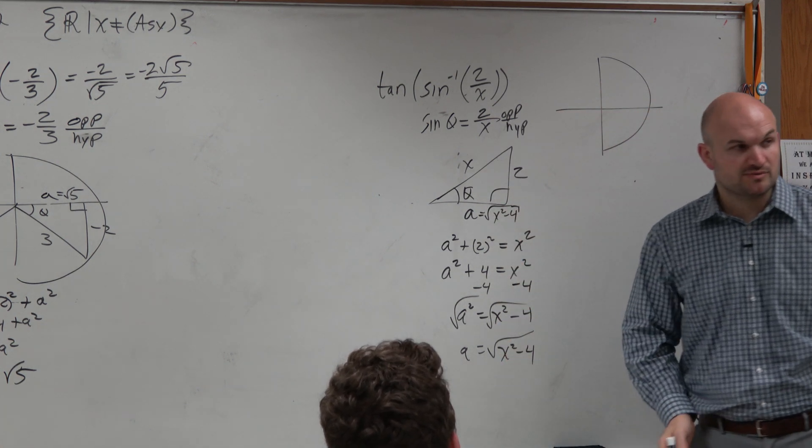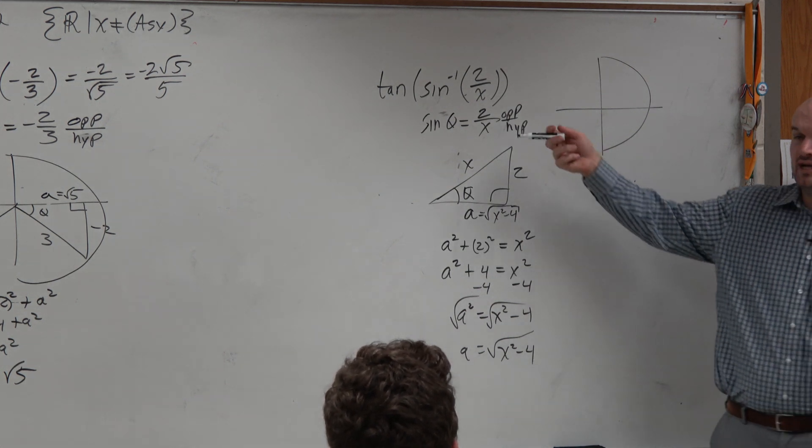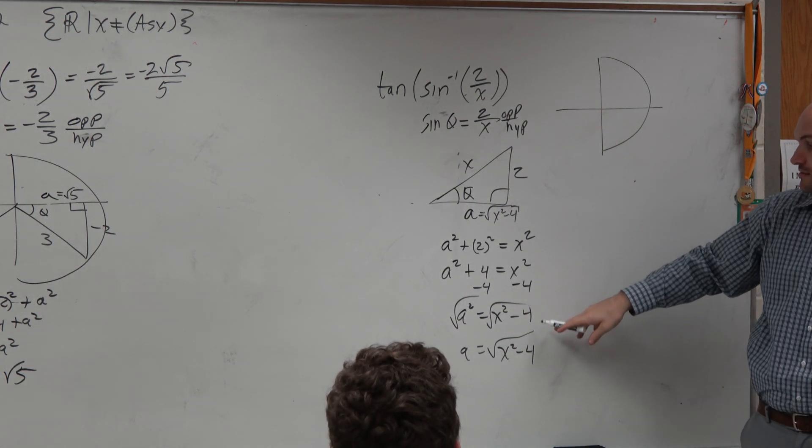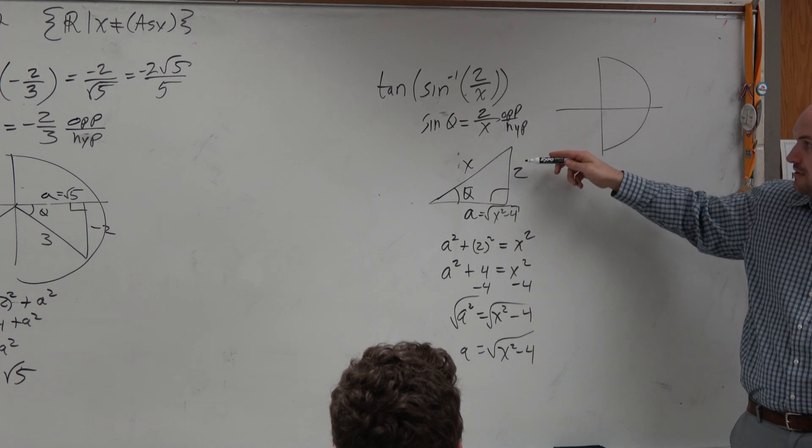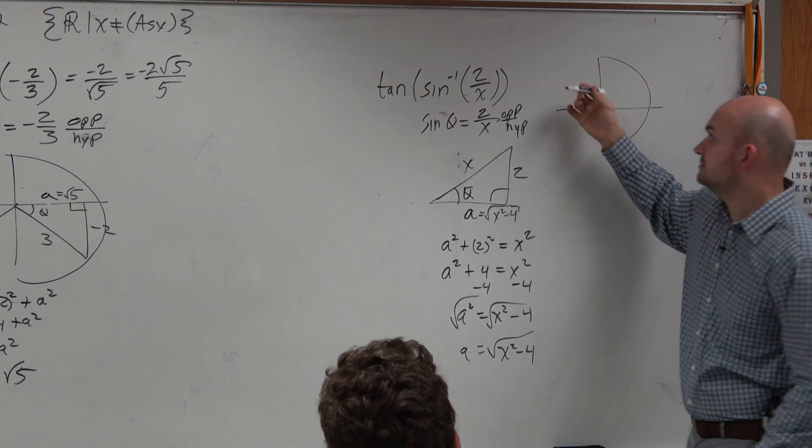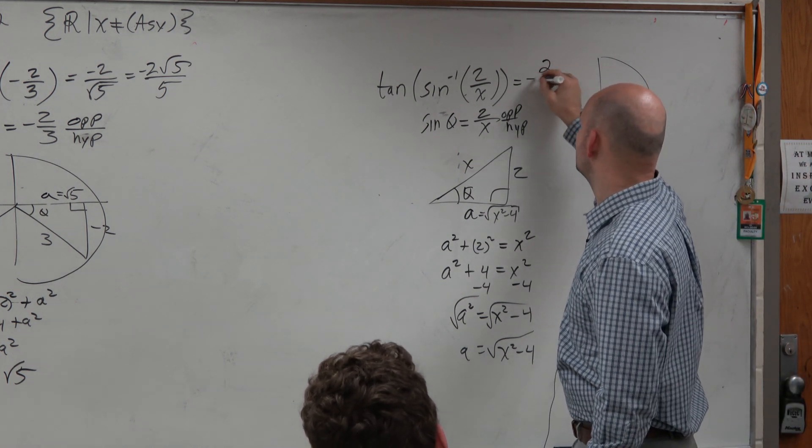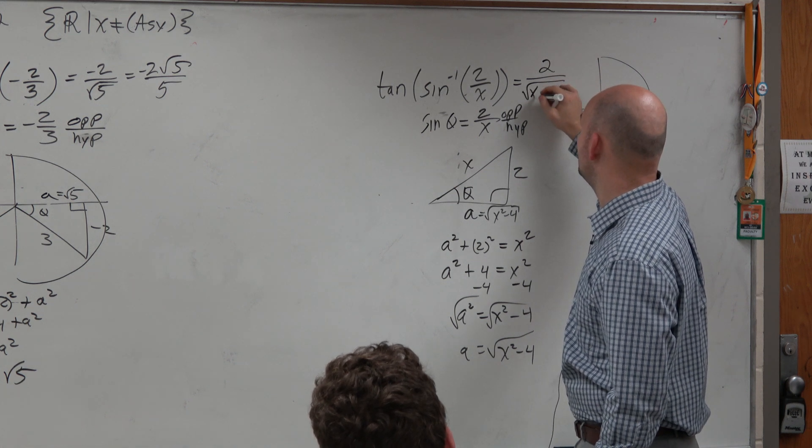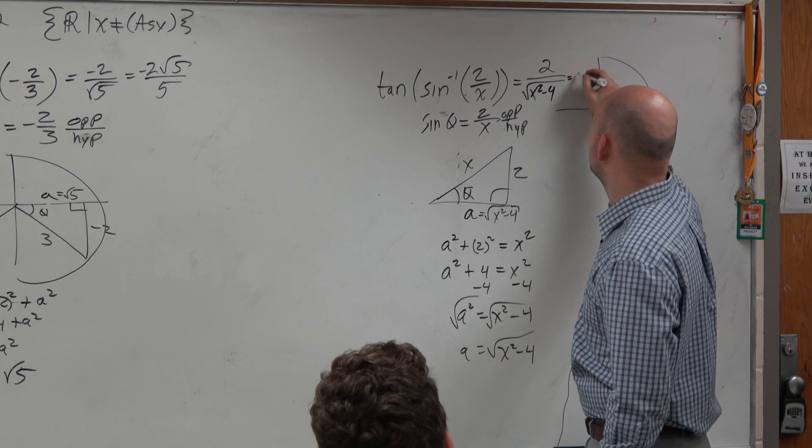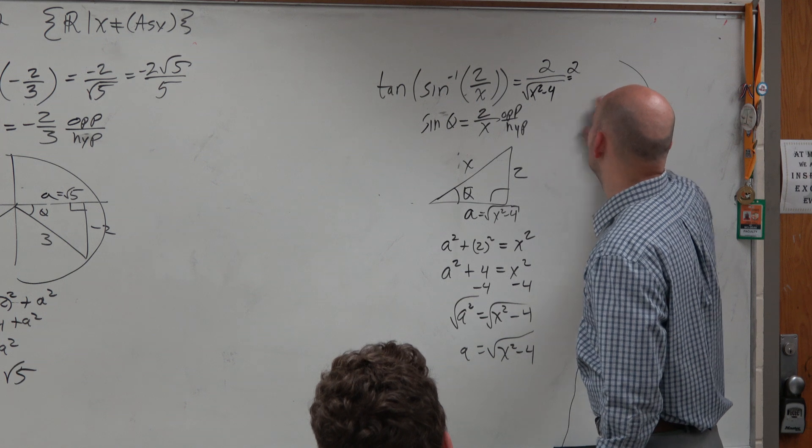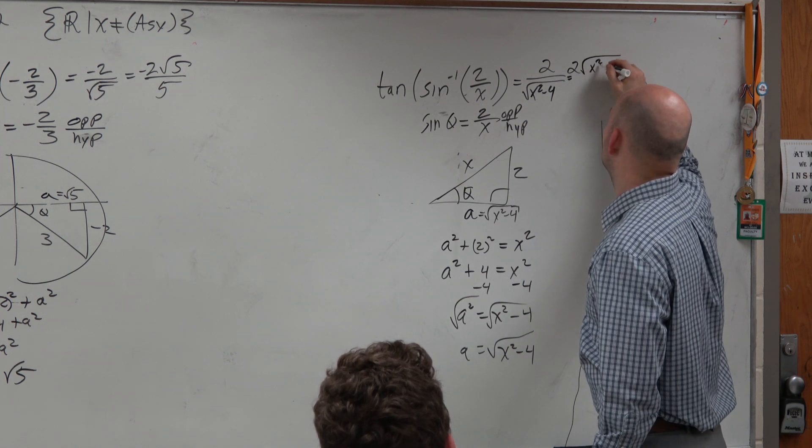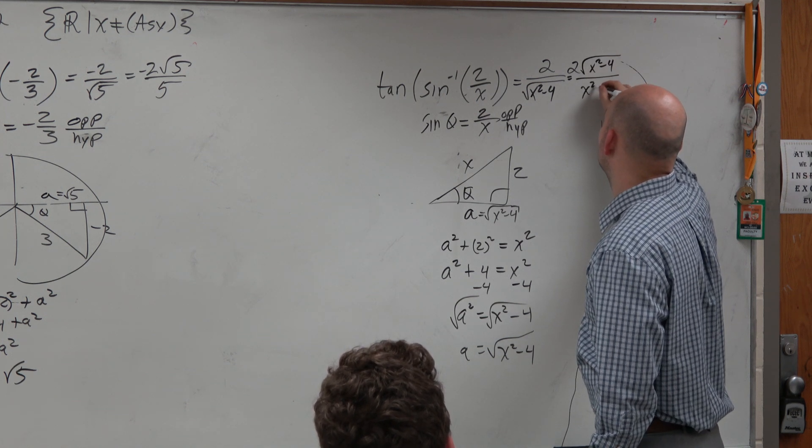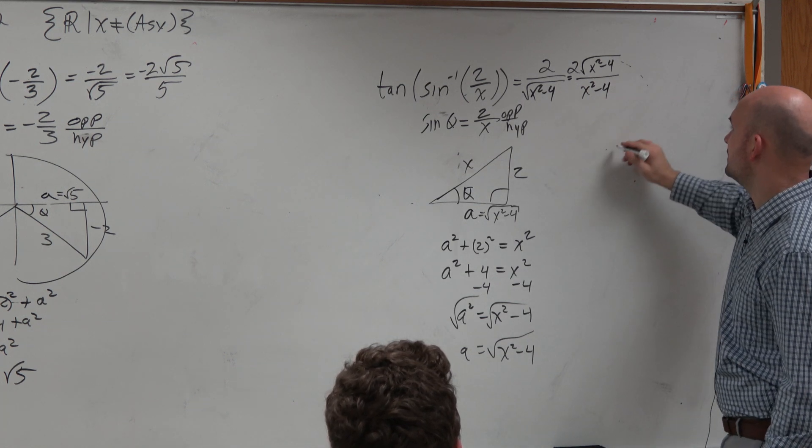So I'll just write this as square root of x squared minus 4. So typically, your equation would say, evaluate this in terms of x. So then, I just have now, I have my opposite over my adjacent. So this answer is 2 over square root of x squared minus 4. If you want to write this in simplified form, or after rationalizing the denominator, it'd look like that.